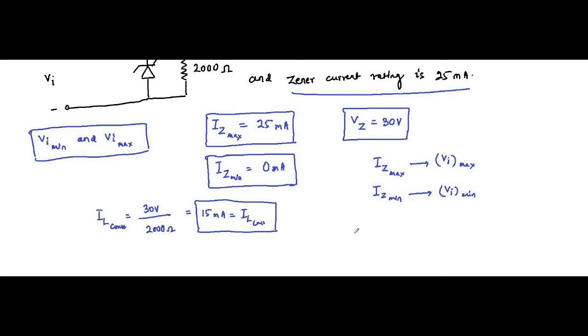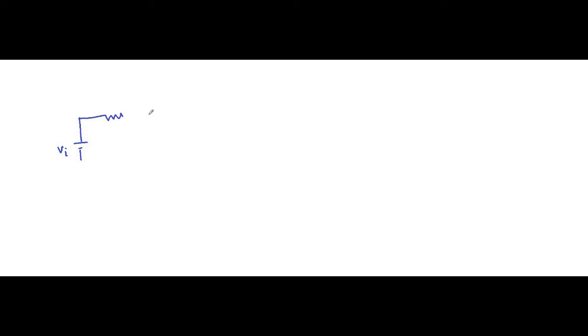To find the range of input voltage we consider both cases: minimum input and maximum input. For minimum input we use minimum Zener current; for maximum input we use maximum Zener current. The basic KVL equation is: VI minus I times R minus VZ equals zero, where VZ equals 30 volt.